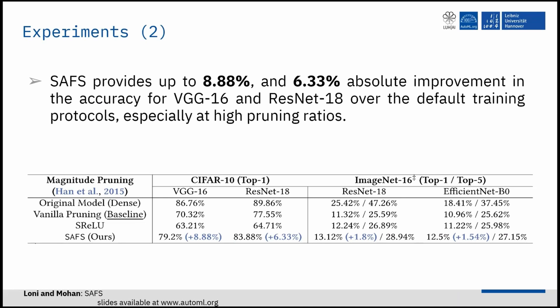The table shows the results of pruning different convolutional neural networks with 99% pruning ratio. Accordingly, SAFS provides up to 8.88% and 6.33% absolute improvement in the accuracy of VGG-16 and ResNet-18 networks, respectively, over the default training protocols.